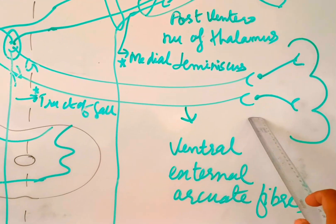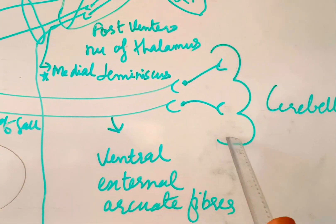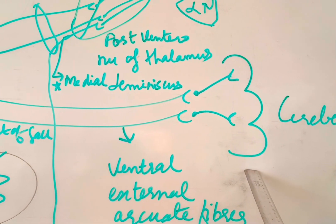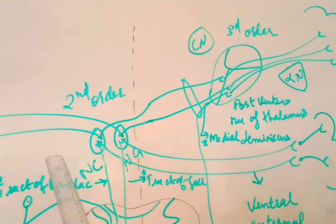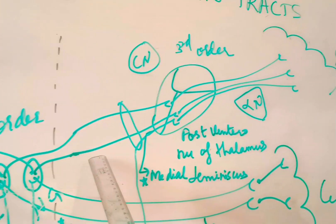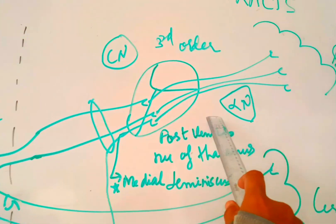Similarly, these are the ventral external arcuate fibers and they go to the cerebellum of the opposite side. While the axons of the rest of the neurons cross to the opposite side, they are called internal arcuate fibers.